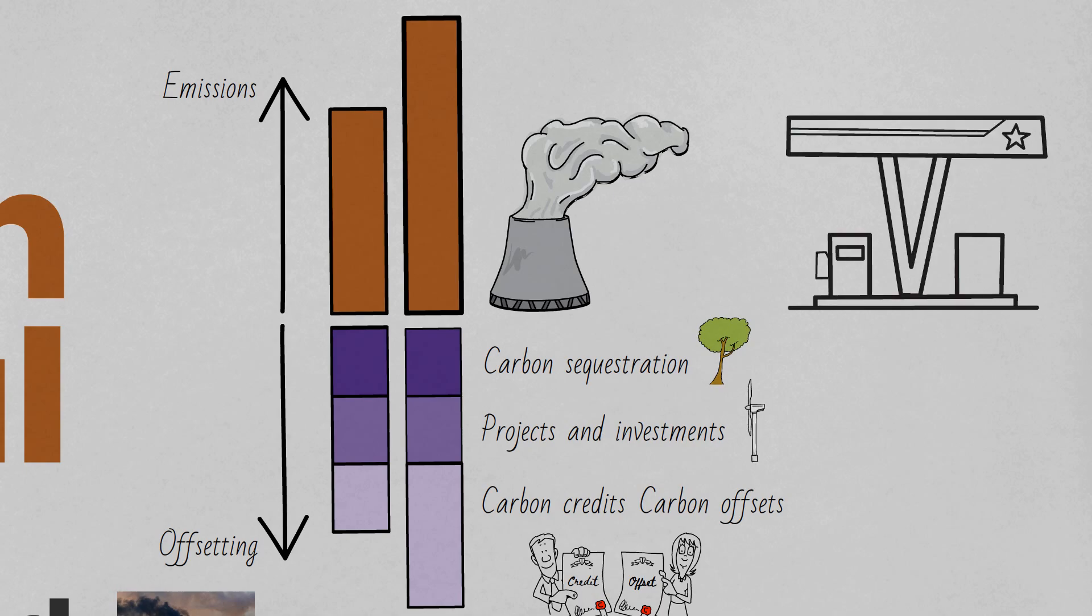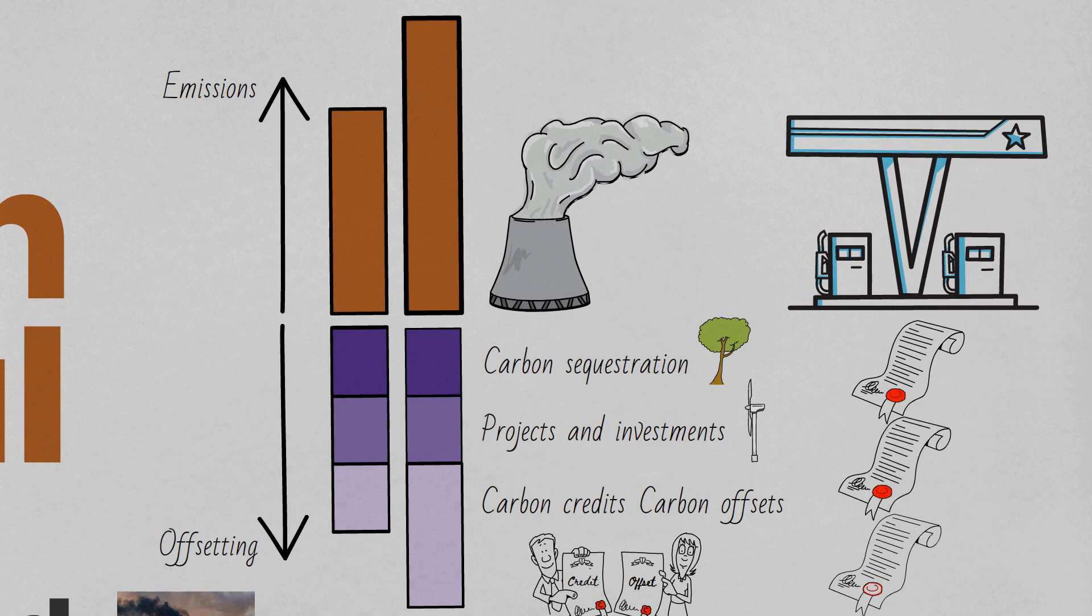So fossil fuel companies, for example, which claim they will achieve carbon neutrality have come under pressure because their plans don't involve reducing the amount of CO2 that their activities produce. They're simply planning on buying more carbon credits or offsets.